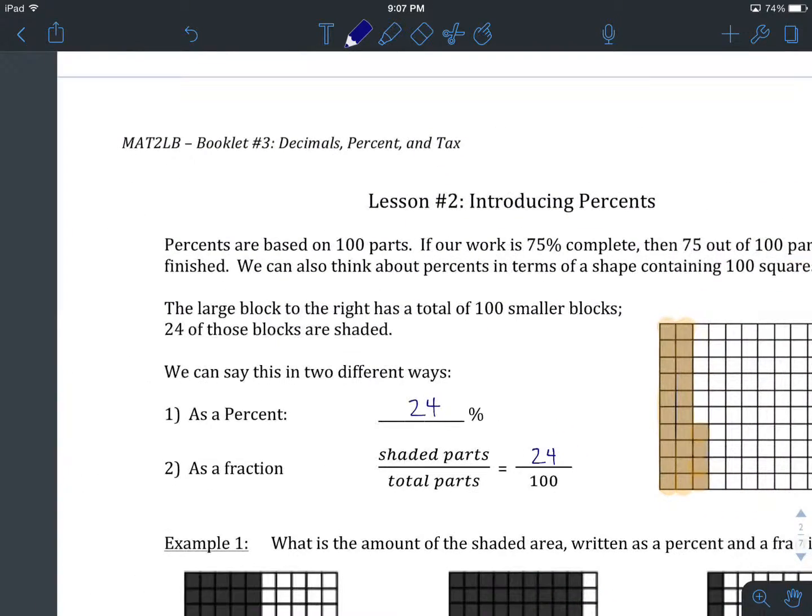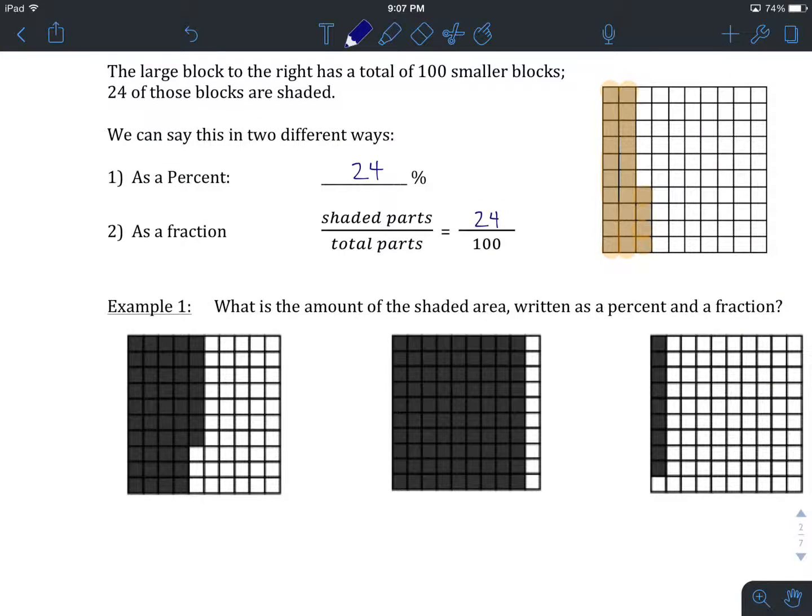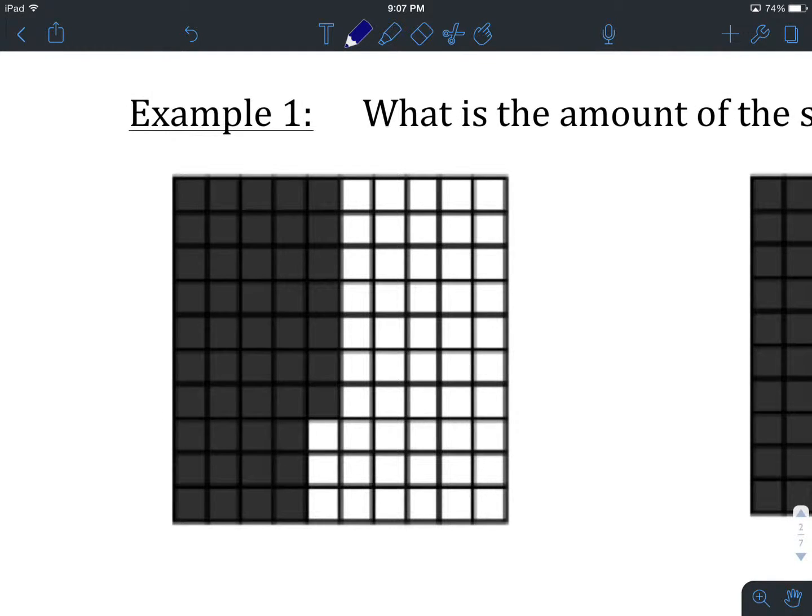That's the main part of our lesson today—to consider how can we express percents in different ways. So let's have a look at the first example. Example number one asks us, what is the amount of the shaded area written as a percent and as a fraction? Let's have a look at this first big square. We know there's 100 squares here in total. Let's figure out how many are actually shaded in. We know that each row is 10, so there's 10.